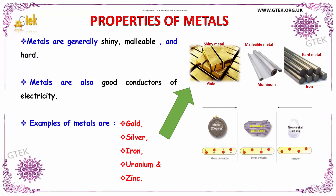Some of the common and well-known examples of metals are gold, silver, iron, uranium, and zinc. These are considered to be some of the examples of metals.